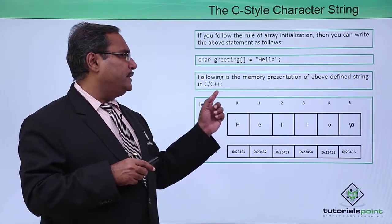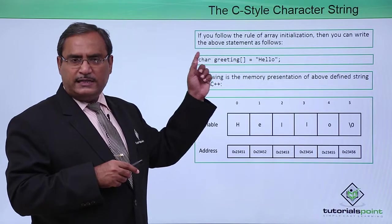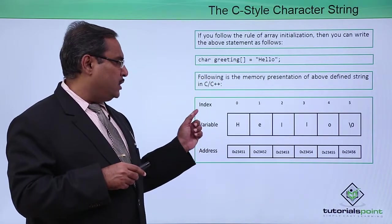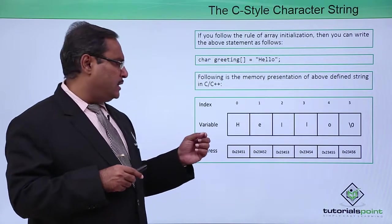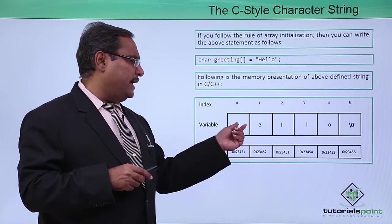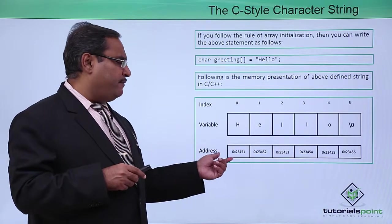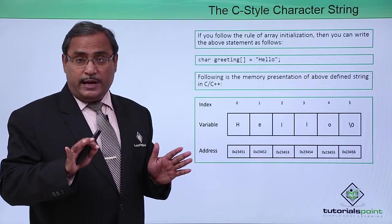Following is the memory representation of the above-defined string in C and C++. Index value will be ranging from 0 to 5, so 6 locations. Variable will be h, e, l, l, o, and then null, and this address we have taken very arbitrary.